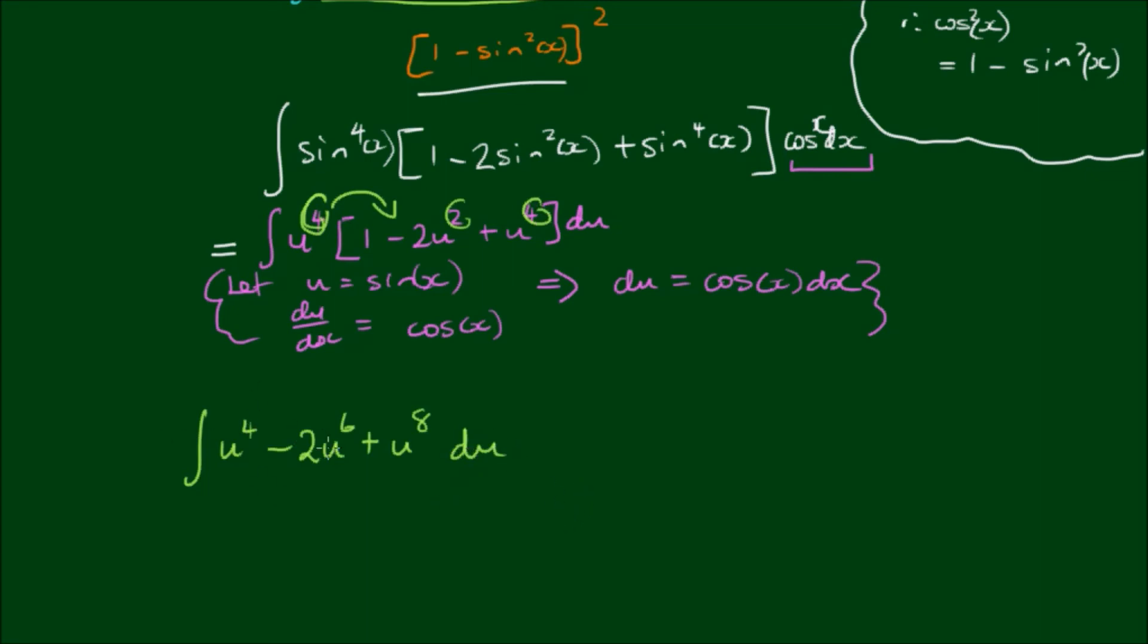So now we just have powers of u, which we can simply use the power formula, which is u to the 5th power. Add 1 to the power, divide by the new power. u to the 5th power on 5 minus 2 by u to the 7th power on 7, plus u to the 8th power on 8.